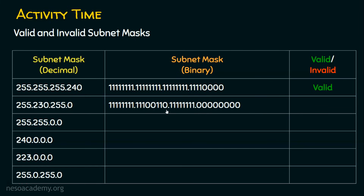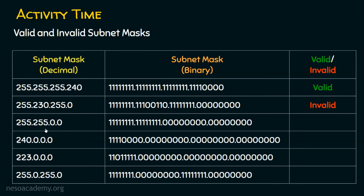The second example, 255.230.255.0, converts to a binary value where zeros appear and are then followed by ones again — this mixture makes it an invalid subnet mask, and no slash notation can be assigned. Next, 255.255.0.0 is valid — 16 consecutive ones then zeros — making it a /16 class B subnet mask. Then 240.0.0.0 is valid: four ones followed by all zeros, giving /4.